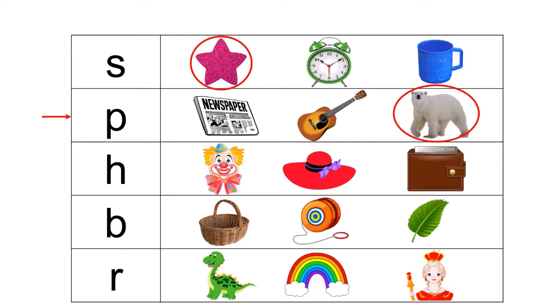The next letter is H, and H makes the sound H. And the pictures are joker, hat, wallet. Joker, hat, wallet. Which of these begin with the H sound? Joker, wallet, hat. Awesome! It is hat. Hat begins with the H sound. Very good.